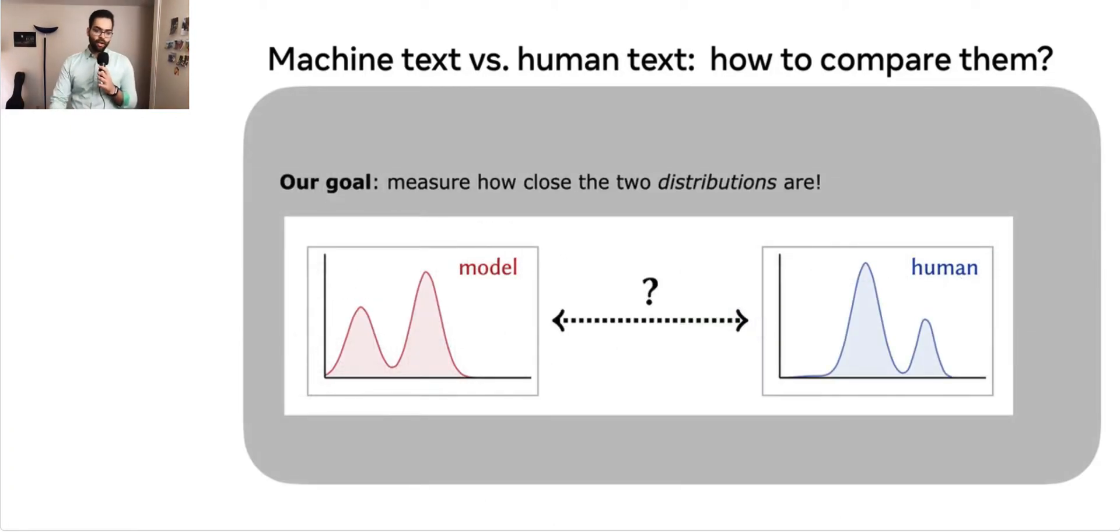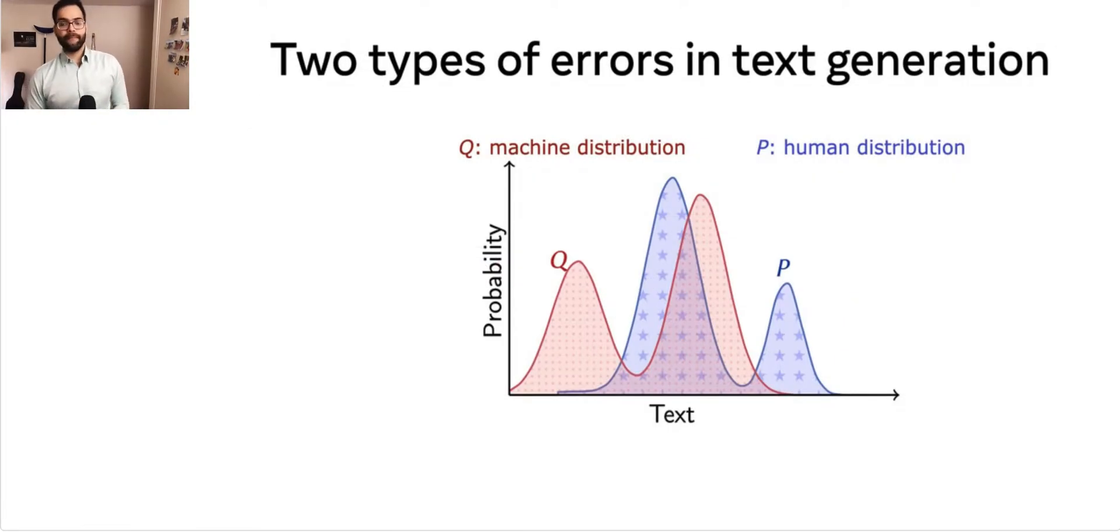We overcome all of these issues by directly comparing the distribution of the generated text to the distribution of human text. We measure how close these two distributions are to each other. Let us start by visualizing the distribution of human written text in blue, also denoted by P, with the distribution of machine generated text shown here in red and denoted by Q. Now, there are two types of errors that the machine distribution Q can make related to the human distribution P.